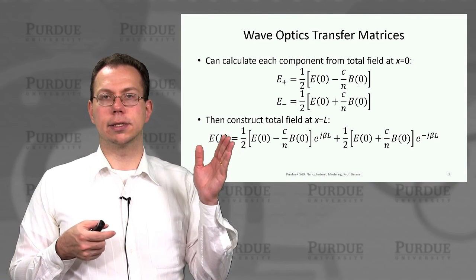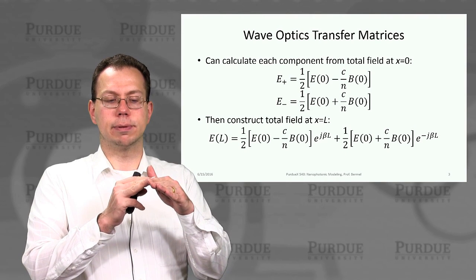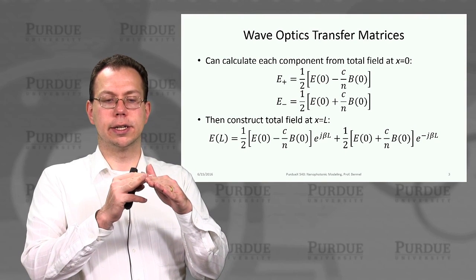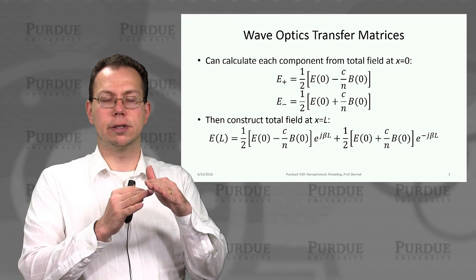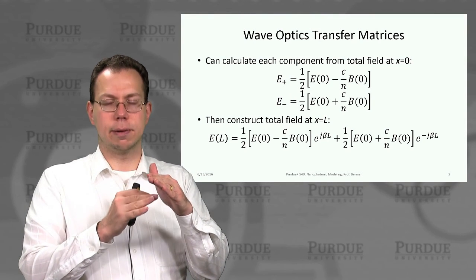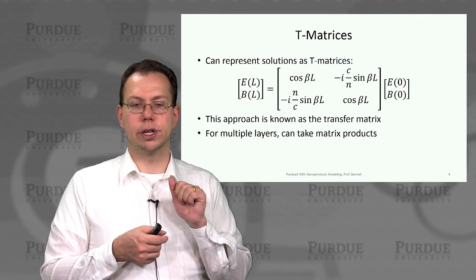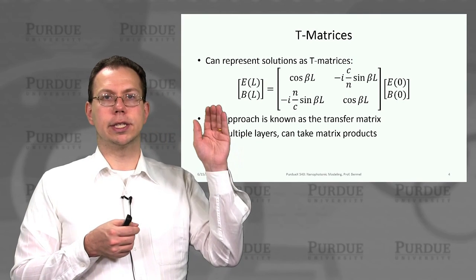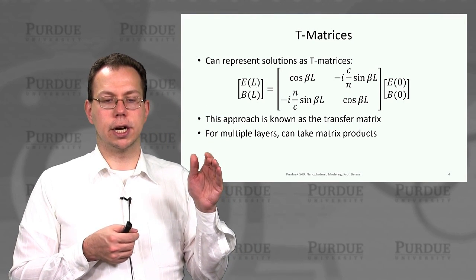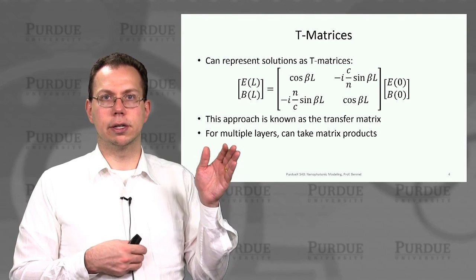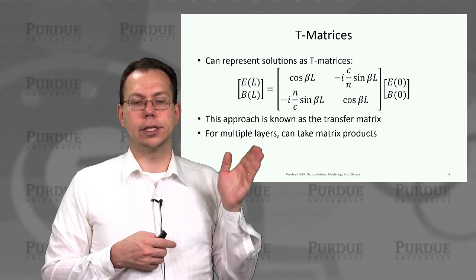So basically the argument is that we started off with fields at this position, and then we extracted the forward and backward propagating components, and then we were able to superimpose the phases that they pick up as they propagate. And so then we can write down the overall solution of the e fields at a distant point in the matrix as a function of the initial e field and b fields at the top of the layer.